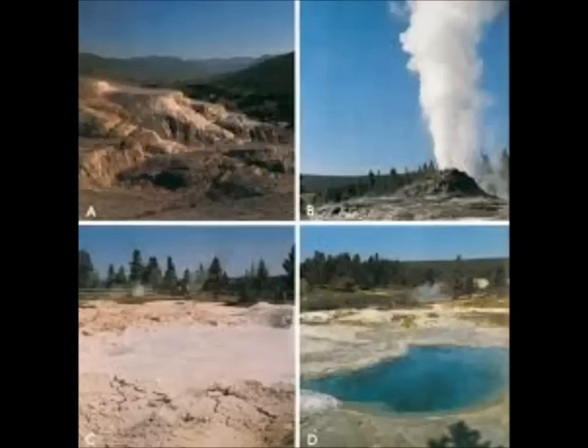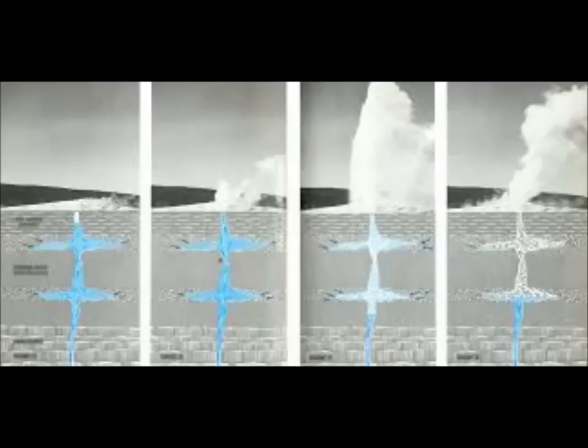He says the seismic network at the Yellowstone supervolcano has been upgraded so the swarm could be analyzed in further detail, allowing experts to precisely locate each tremor and create a map showing where each earthquake occurred and how the swarm moved. He wrote that the patterns of seismicity revealed from the swarm processing are striking.